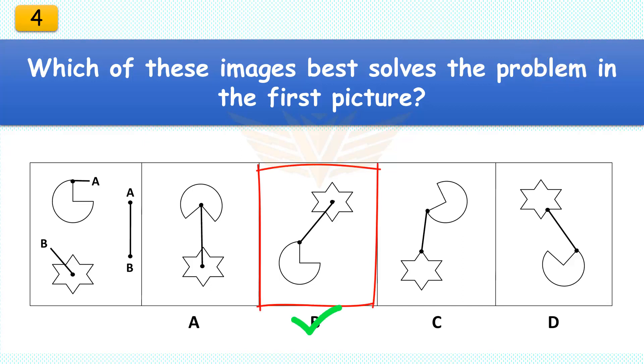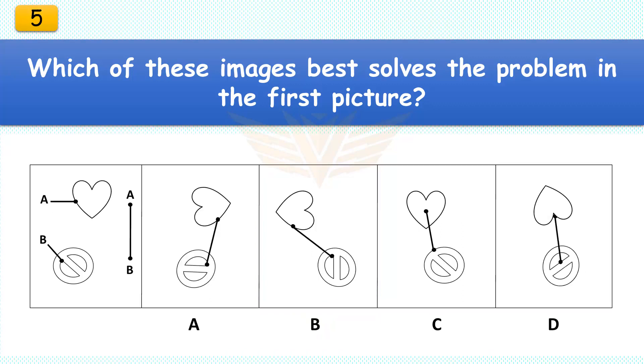Which of these images best solves the problem in the first picture? The correct answer is B. Keep the pictures as they are but put the star above the pacman symbol.